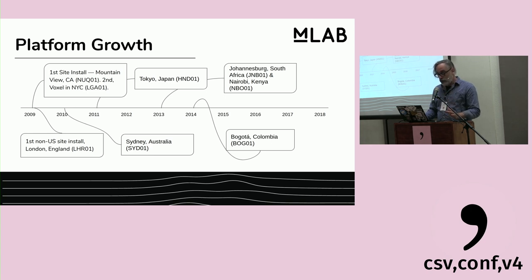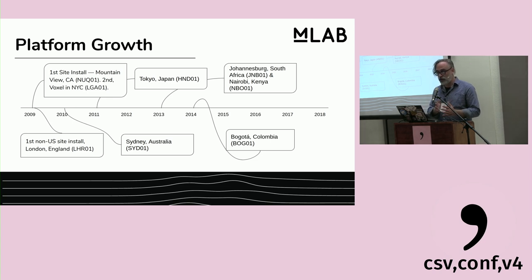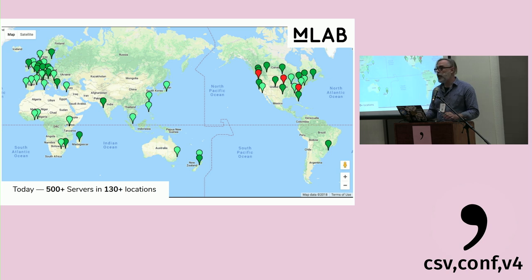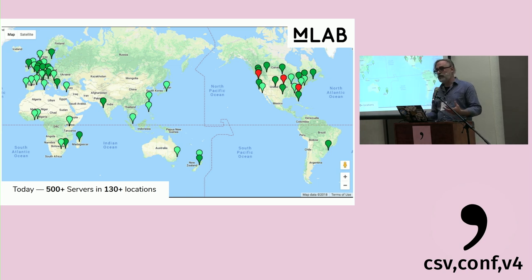Over the last 10 years we've grown — this is a platform growth slide showing how long we've been in existence and where we've placed servers over time. We have servers in lots of places: about 130 locations, 500-plus servers. Not in all areas of the world, so we're working on that. We have a pretty heavy North American and European presence but a smattering across the rest of the world.